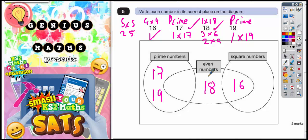The number 18 is just an even number. It's not prime, and it's not square. But the number 16 is an even number, but it's also a square number because it comes from a 4 by 4 square. So that is the correct place to put each of your numbers.